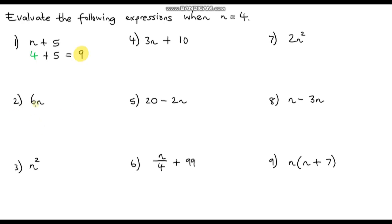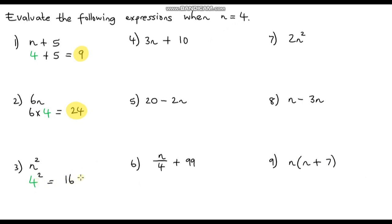Question 2: 6n. This means 6 multiplied by n. So instead of 6 times n, we're going to have 6 times 4, and 6 times 4 is 24. Question 3 is n squared. Instead of n squared, it's going to be 4 squared — that's 4 times 4, which is 16.